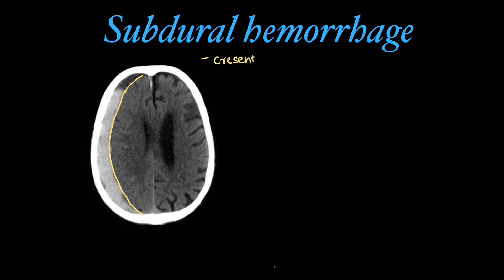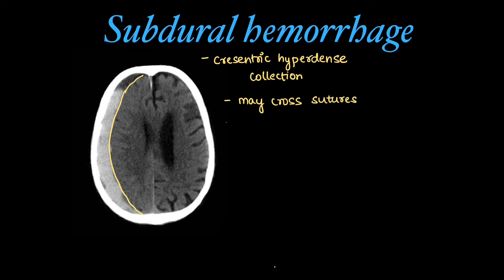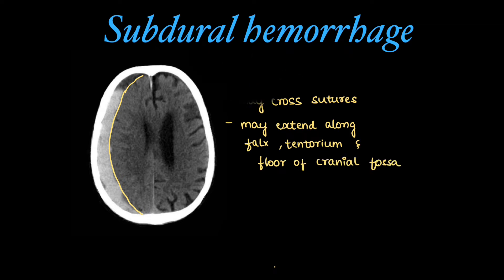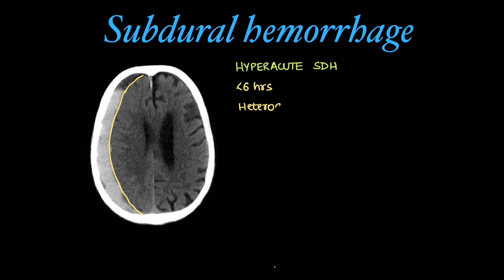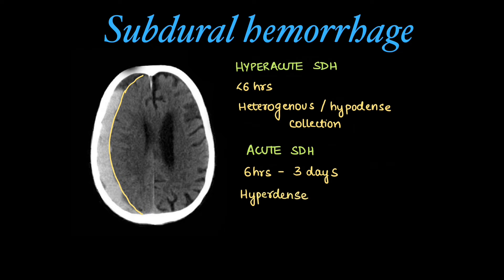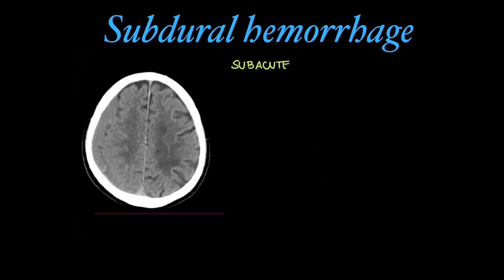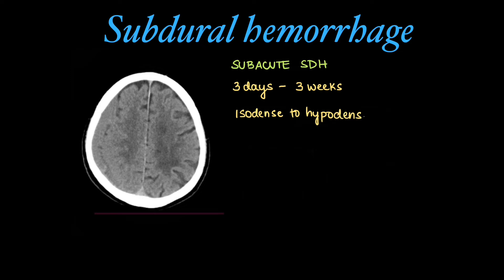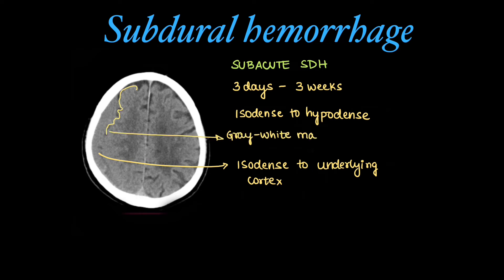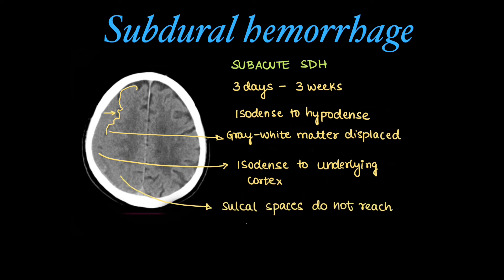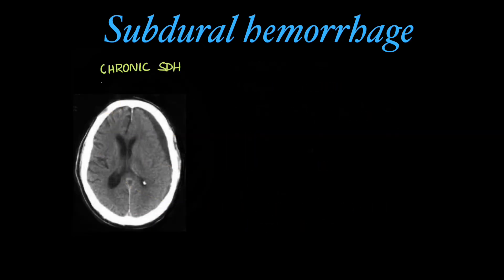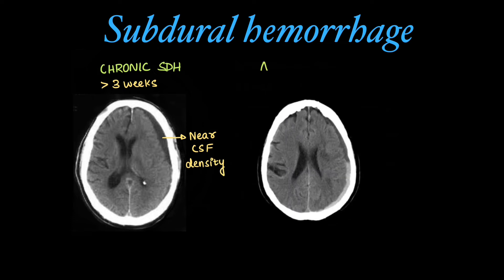Subdural hemorrhage appears on CT as a crescentic hyperdense collection which may cross the sutures. It may extend along the falx, tentorium, and floor of the cranial fossa. Types are based on the duration of the bleed. Hyperacute SDH, imaged within 6 hours, appears as a heterogeneous or hypodense collection. Acute SDH is within 6 hours to 3 days and appears hyperdense. Subacute SDH is from 3 days to 3 weeks and can appear isodense or hypodense — the grey and white matter junction is displaced and sulcal spaces do not reach the inner calvaria. Chronic SDH is after 3 weeks where the collection reaches near CSF density. Acute-on-chronic SDH is a re-bleed within the subdural hemorrhage showing a hematocrit level.